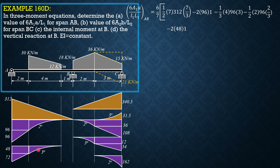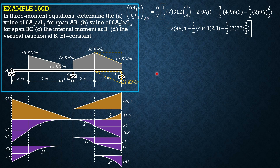Minus the moment of the third-degree curve: one fourth of 4 times 48, with the centroid distance from the left end being 4/5 plus 2 equals 2.8; so minus one fourth of 4 times 48 times 2.8. Then minus the moment of the triangle: one half of 2 times 72 times 2/3. Evaluating all these terms, the value of 6 × Area1A / (i1 × l1) for span AB equals 1396.8 kN·m².